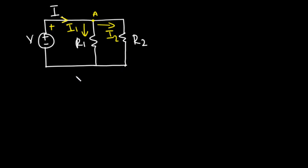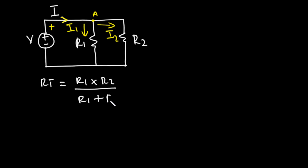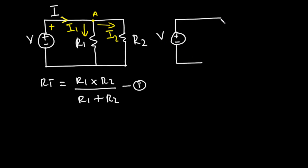To find the values of I1 and I2, we first need to develop an expression for each. Since the two resistors are connected in parallel, their total resistance is given by RT = (R1 × R2) / (R1 + R2) — let's call this equation one. After combining the two resistors, the circuit will have the voltage source connected across RT with current I flowing through it.